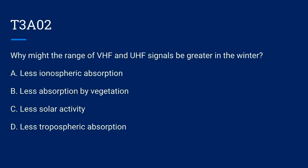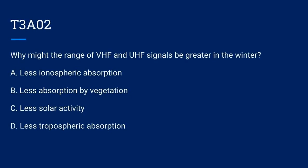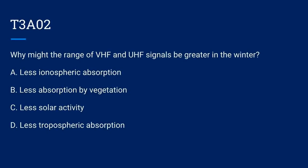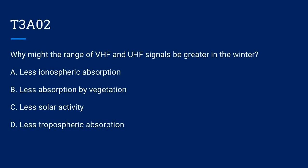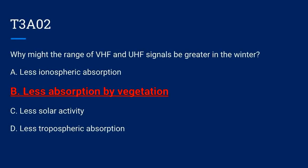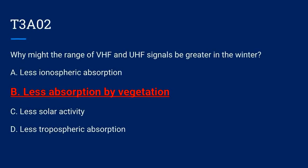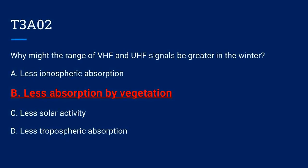T3A02. Why might the range of VHF and UHF signals be greater in the winter? A. Less ionospheric absorption. B. Less absorption by vegetation. C. Less solar activity. Or D. Less tropospheric absorption. Correct answer is B: less absorption by vegetation.